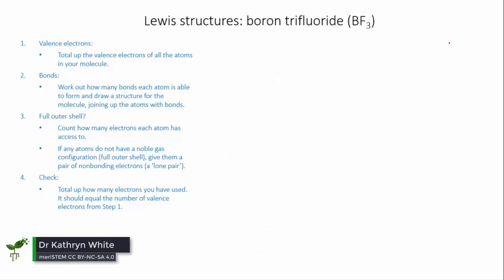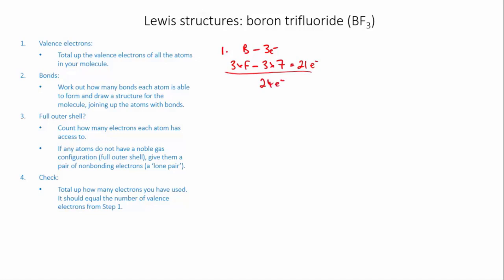Third example: boron trifluoride. Valence electrons - boron has three and there are three fluorines which are in group seven, so they each have seven. When I total that up I have 24 electrons to play with.